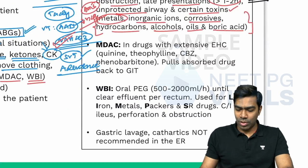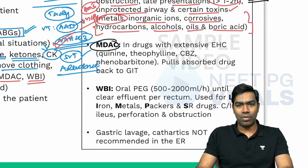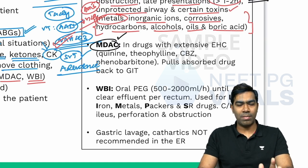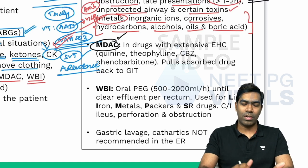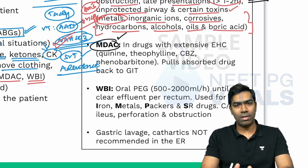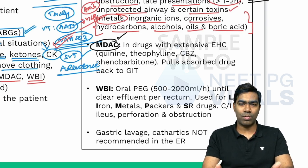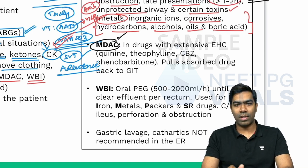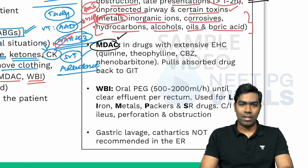Another procedure is multi-dose activated charcoal. The total dose is the same — 50 grams — but given in a phased manner: 12.5 grams per hour for four hours, or 25 grams followed by another 25 grams after two hours. The total dose is the same but split into phases.